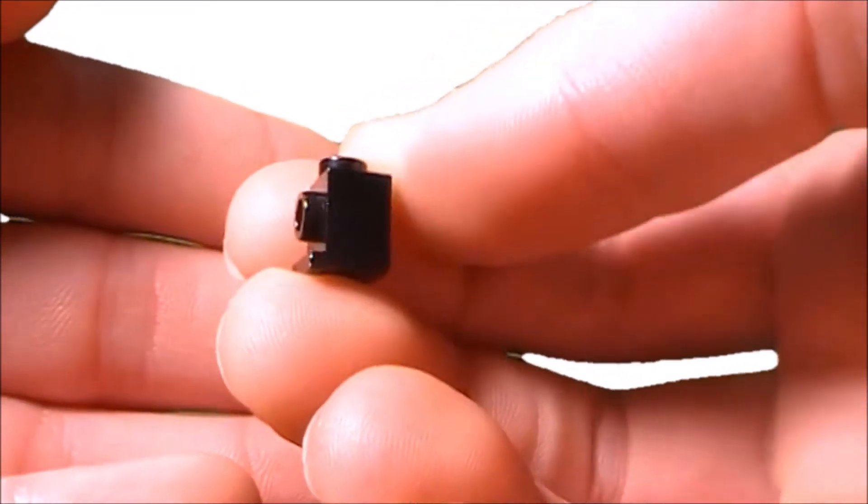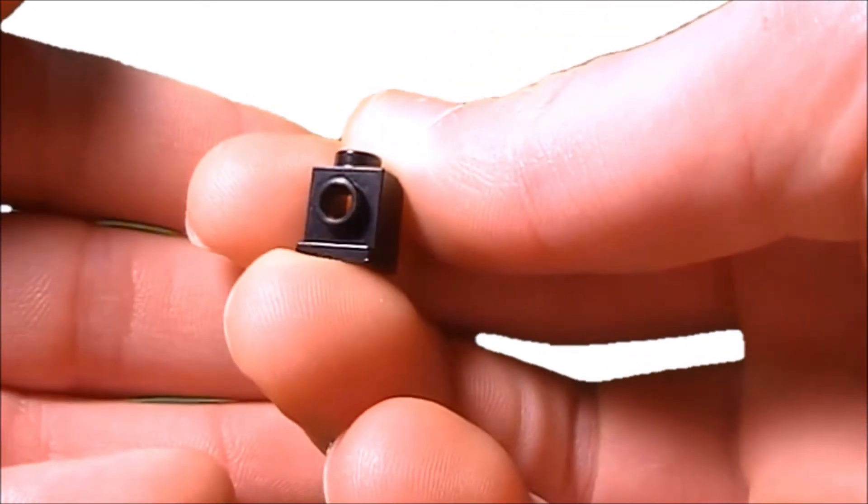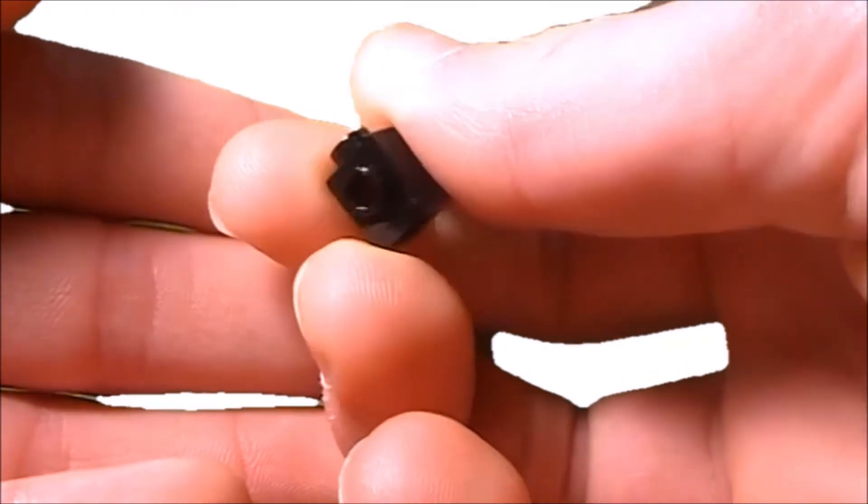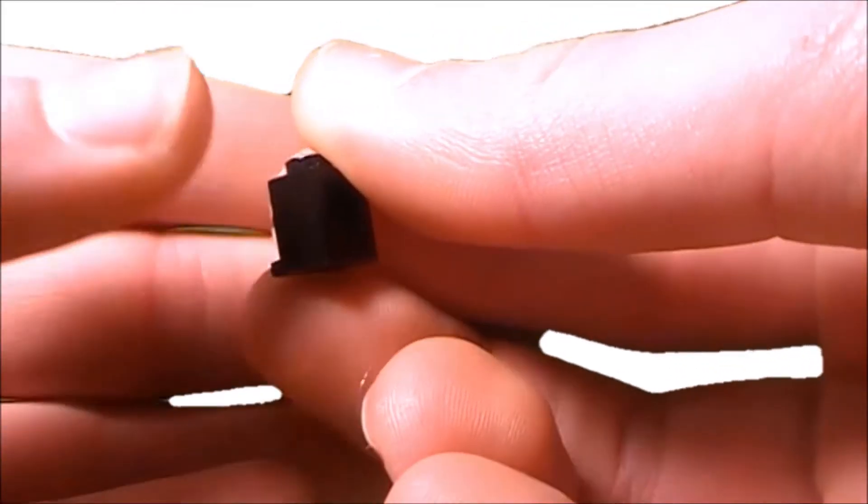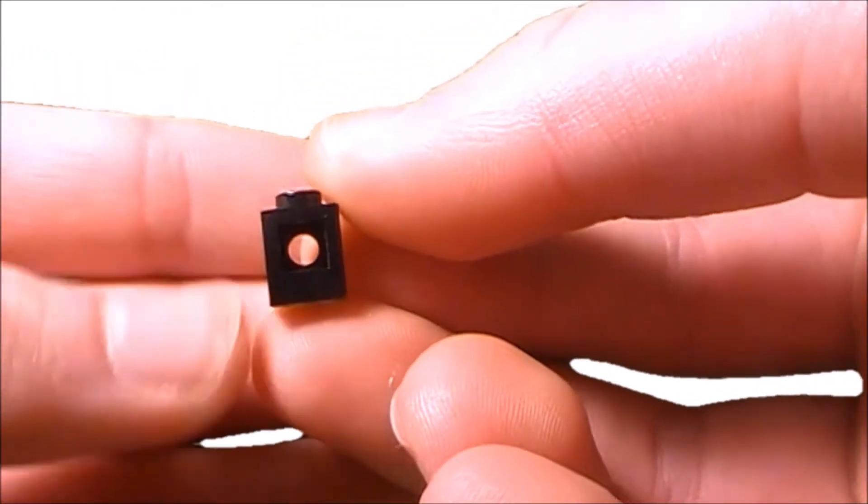If you remember, all LEGO bricks are measured in LEGO meters. A 1x1 being 5x6 LEGO meters. What we are going to look at is how some of these snot pieces fit together.